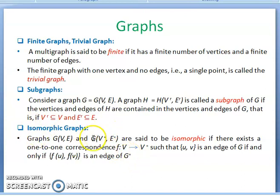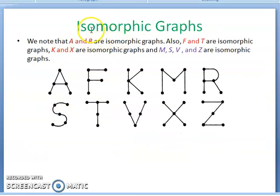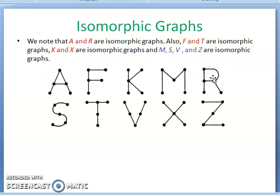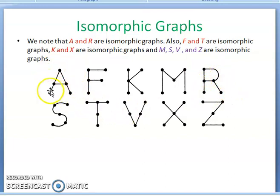To verify isomorphism, take two graphs and check whether they are isomorphic. For graphs A and R — these two are isomorphic. Symbolically they look different but have the same properties. How do you verify? First, the number of vertices must be equal: here A has 5 vertices and R also has 5 vertices. Second, the number of edges must be equal: A has 5 edges and R also has 5 edges.